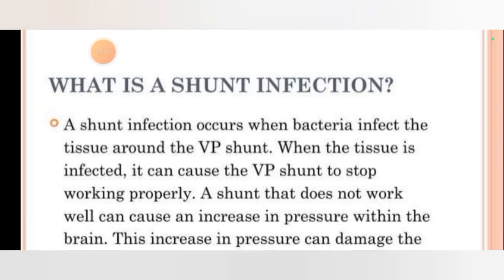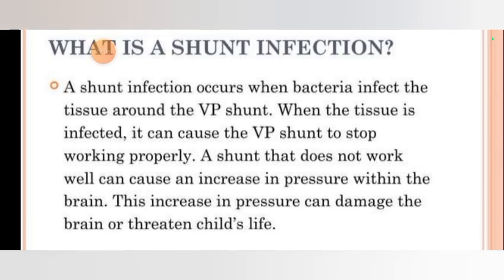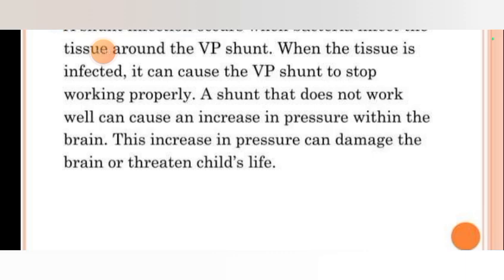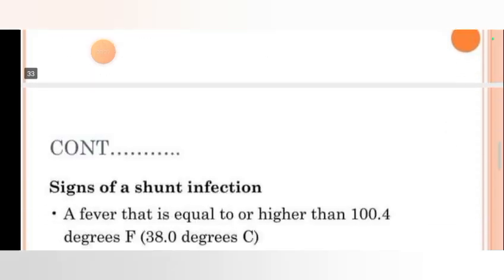A shunt infection occurs when bacteria infect the tissue around the VP shunt. When the tissue is infected, it can cause the VP shunt to stop working properly. A shunt that does not work well can cause an increase in pressure within the brain, which can damage the brain or threaten the child's life.